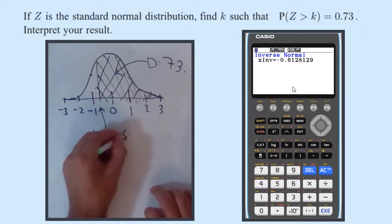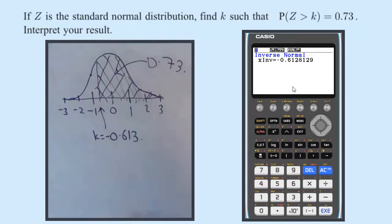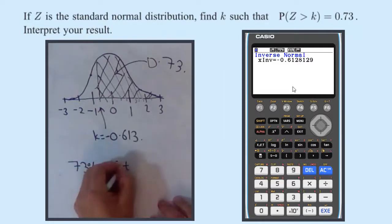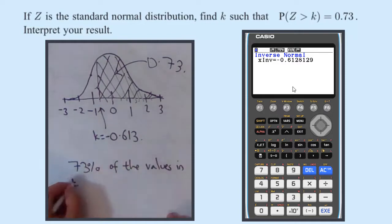So as far as interpreting it, well if you've got this picture it already is the interpretation really, but what it means is 73 percent of the values in the distribution, in the z distribution,